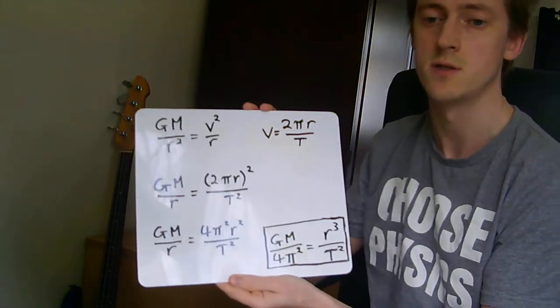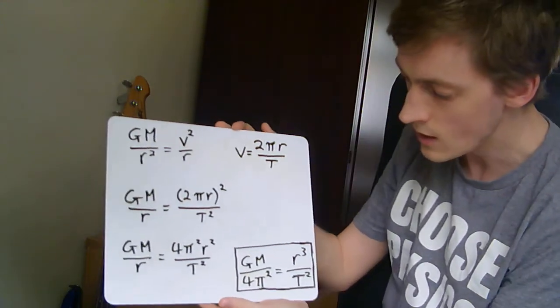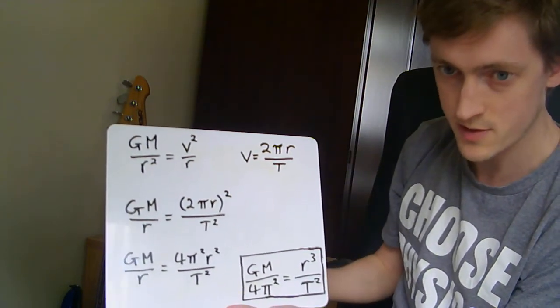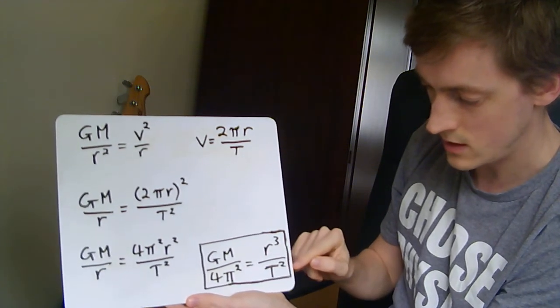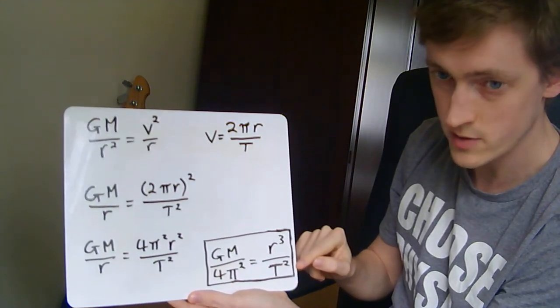But let's go for the Sun as a good example. If you take r cubed over t squared for anything going around the Sun, it's the same. So r is the radius of orbit and t is the time period taken.